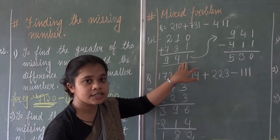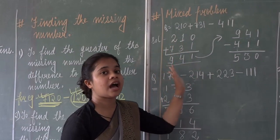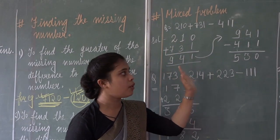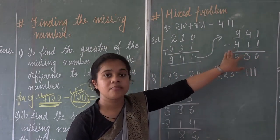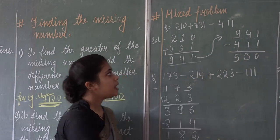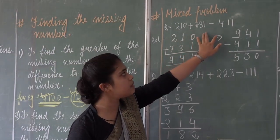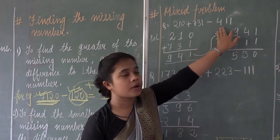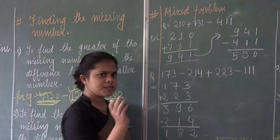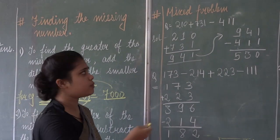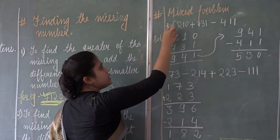For mixed problems, first of all you need to add the numbers which are having a plus sign before them, and then subtract the number which is having a minus sign before it. For example, 210 plus 731 minus 400. As I mentioned in the previous lesson, if there is no sign before a number, it means it is plus.